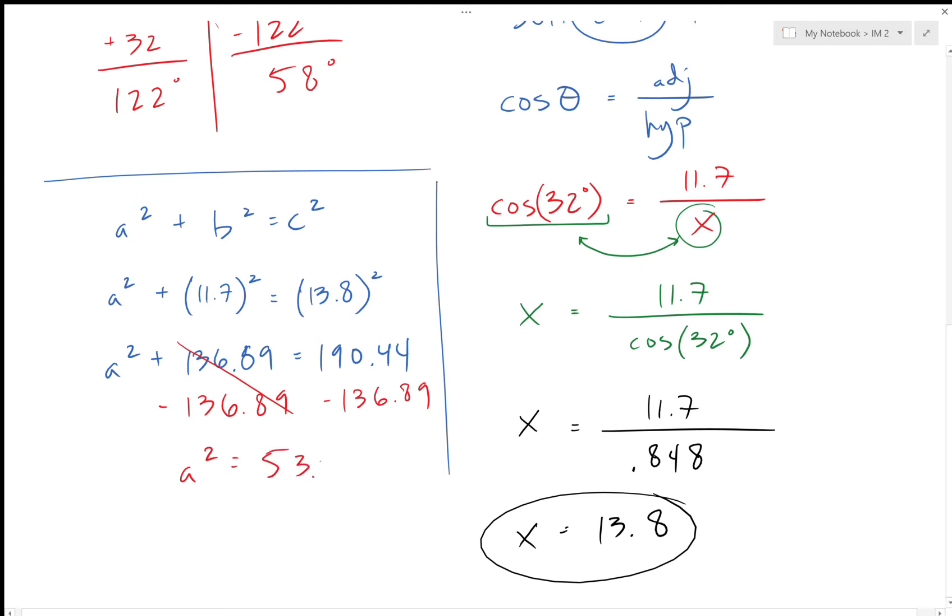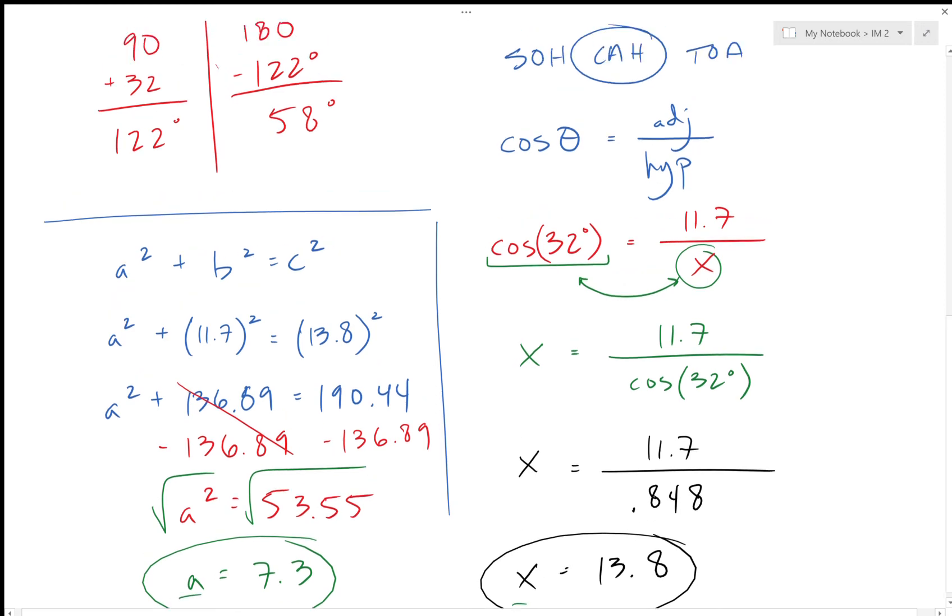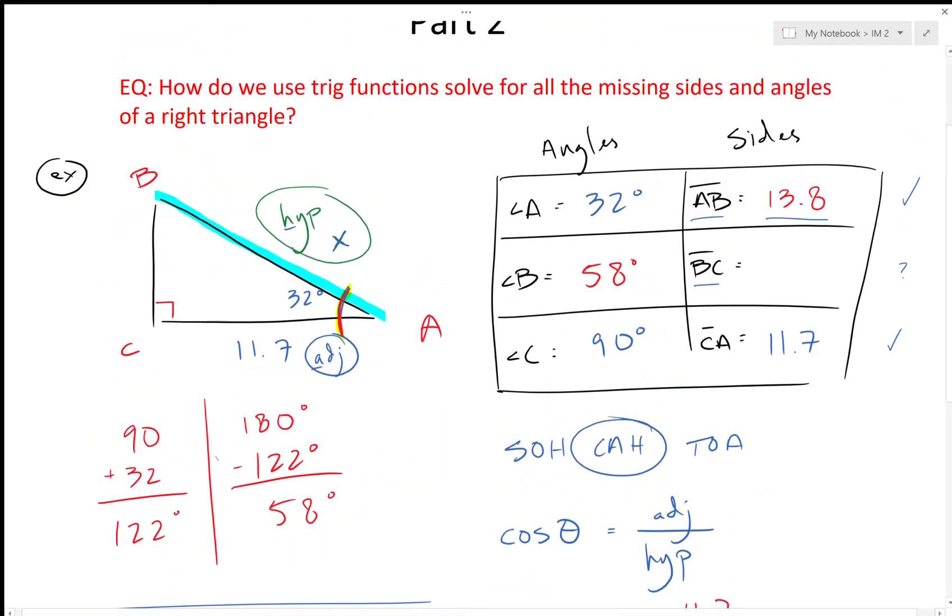Those cancel, so A squared equals—minus 136.89—53.55. And then finally to get A by itself, square roots. So A is, let's take the square root of that number, 7.3 when you round it.